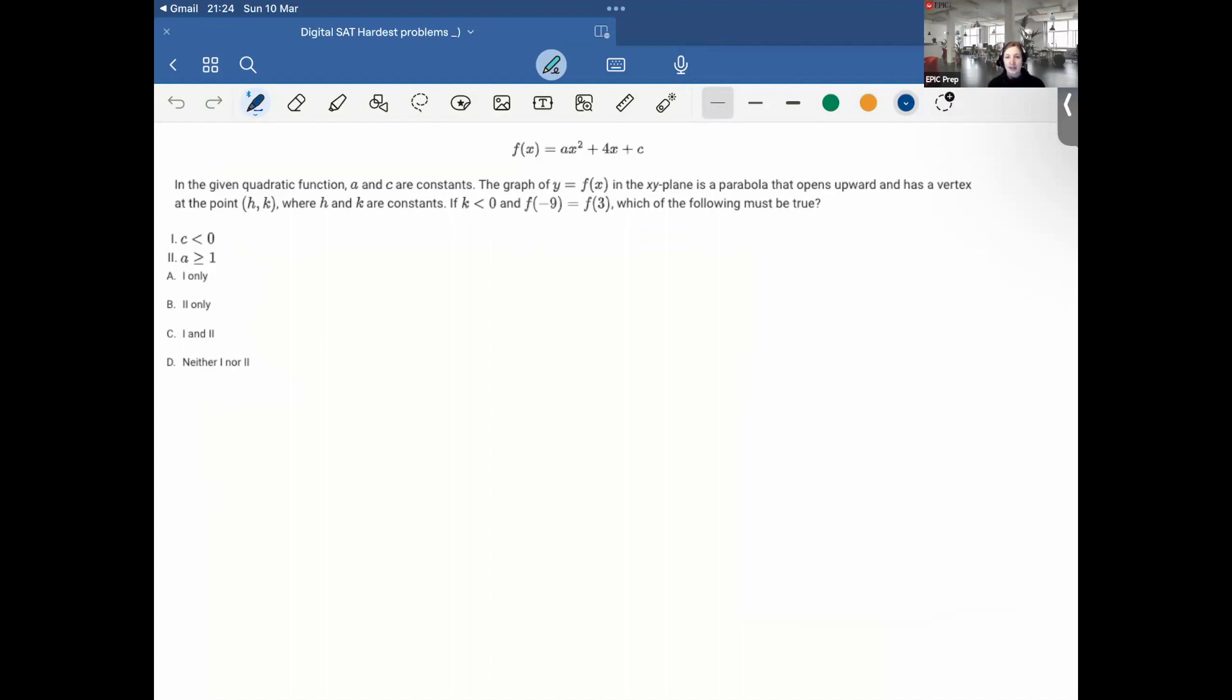Okay, so let's just jump right into it. In this problem here, it gives me a quadratic equation, and it tells me that the exoplanus parabola that opens upward, so a is positive, has a vertex at point h,k, where k is less than 0, and f of negative 9 is equal to f of 3, which of the following must be true. Why would f of negative 9 and f of 3 be equal to each other? Where would that occur? Where y is equal to 0 is where they would equal each other, and that's basically the x-intercepts of the parabola.